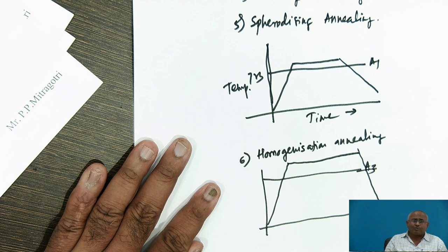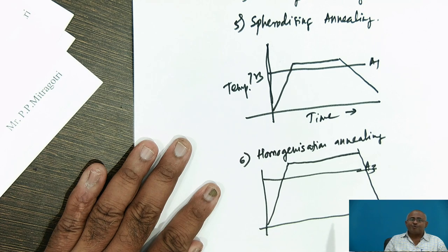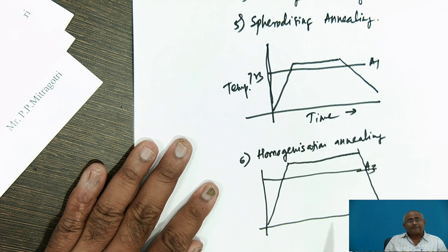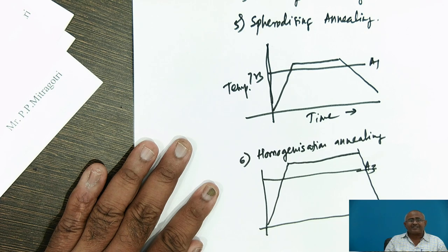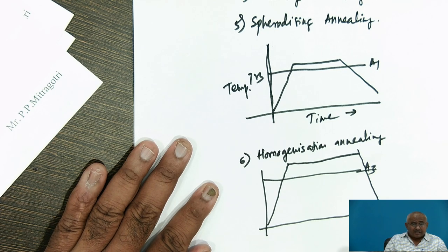After homogenization is achieved, another problem arises — due to prolonged holding at very high temperature, a very coarse grained structure develops in the steel, which will hamper many of the steel's properties. Therefore, after homogenization annealing it is always mandatory to carry out full annealing so that grain size and structure can be refined. Homogenization annealing alone can never be the only heat treatment suggested for alloy steel castings; full annealing must always follow.